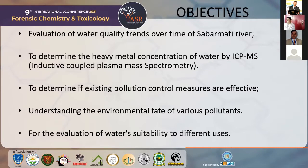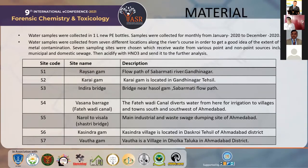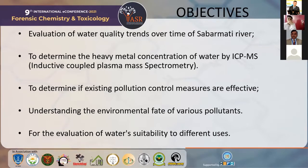The fourth objective is to understand the environmental state of various pollutants — if metals are more concentrated or toxic in the future, what kind of diseases may develop in humans, animals, or ecosystems. The fifth objective is to evaluate water suitability for different uses. If the metallic concentration in water is very high, it is not suitable for drinking and we must avoid it. If the concentration is within suitable limits for household use, then we use that amount only.